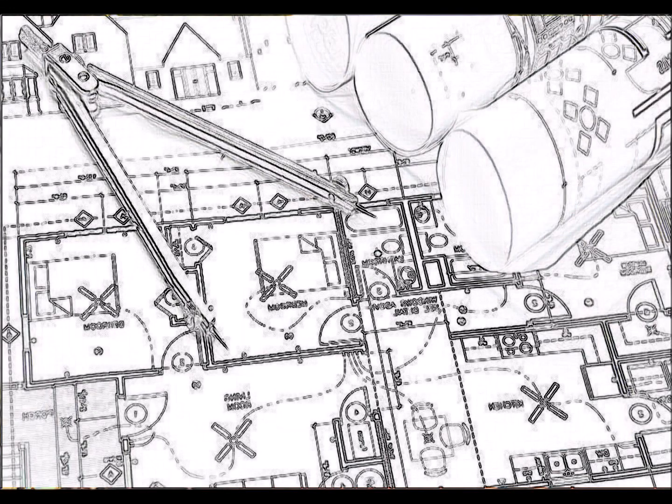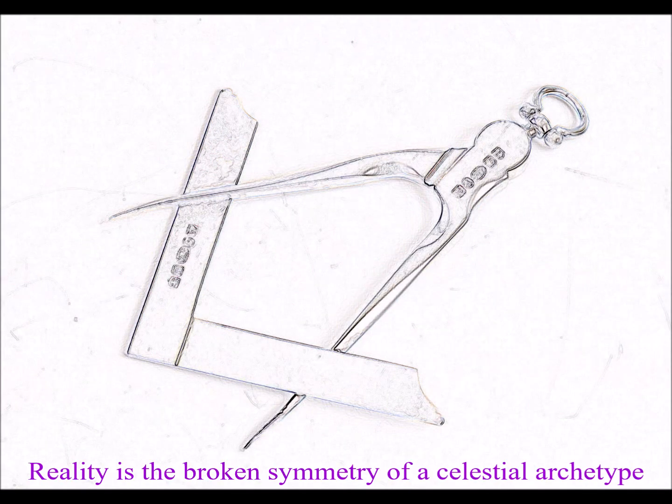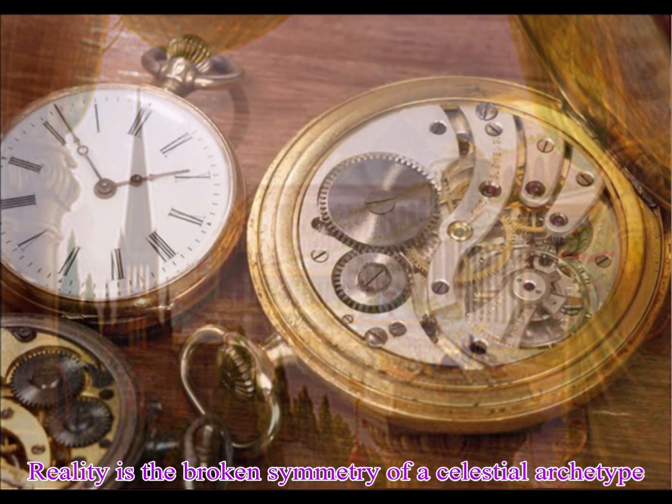If an architect wants to design something, he uses a compass and set square with a straight edge and right angle. With just these tools, it is possible to create beautiful architecture and complexity.